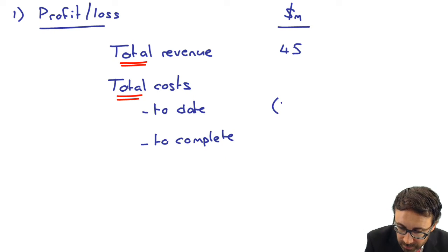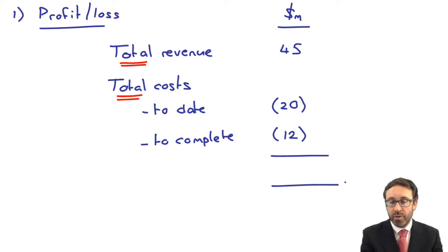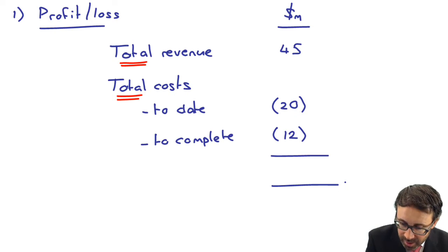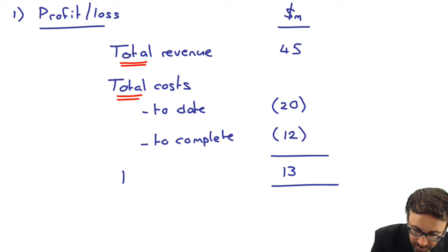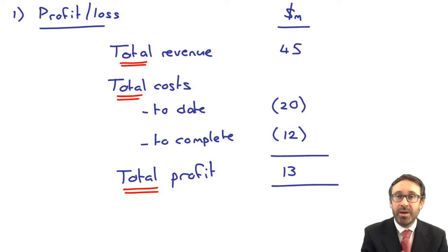So again, here, our cost to date, I think we're 20. Our cost to complete is 12. So when you go through there and do 45 less 20 less 12, that is 13 million. So that is our total profit. It's that total profit that then needs to be recognized over the life of the contract. So here it's three years.